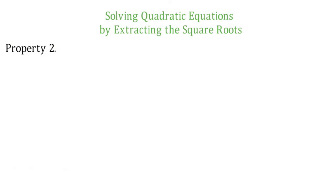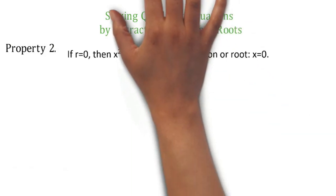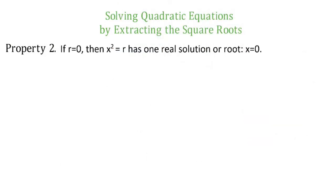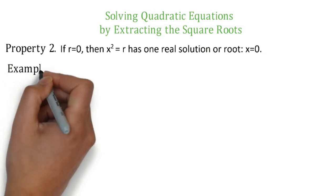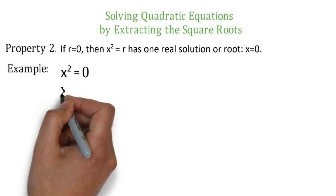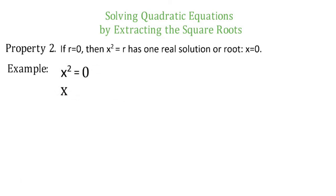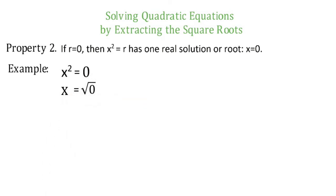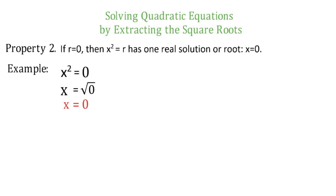We will move on now to property number 2 in solving quadratic equations by extracting the square roots. If r is equal to 0, then x squared is equal to r has one real solution or root. That is, x is equal to 0. For example, x squared is equal to 0. If the value of r is 0, then the square root of 0 is still 0. Madali lang yung property number 2.